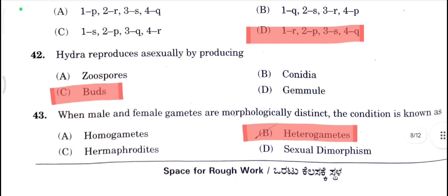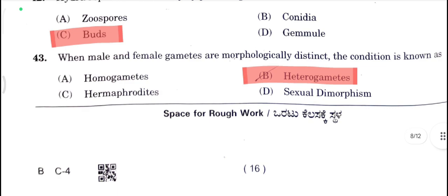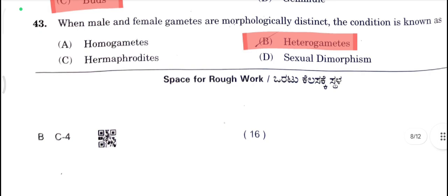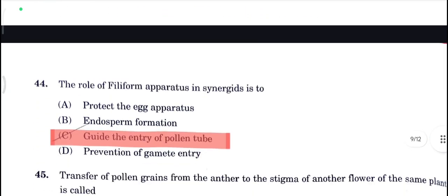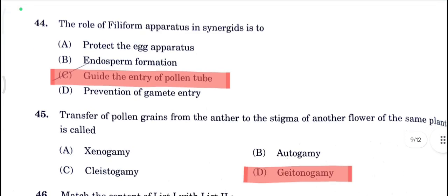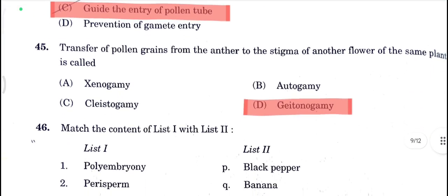Hydra reproduces asexually by producing buds — buds is your correct answer here. Next, male and female gametes are morphologically distinct, so the condition is heterogametes. The role of filiform apparatus in synergids is to guide the entry of the pollen tube — that is your correct answer.